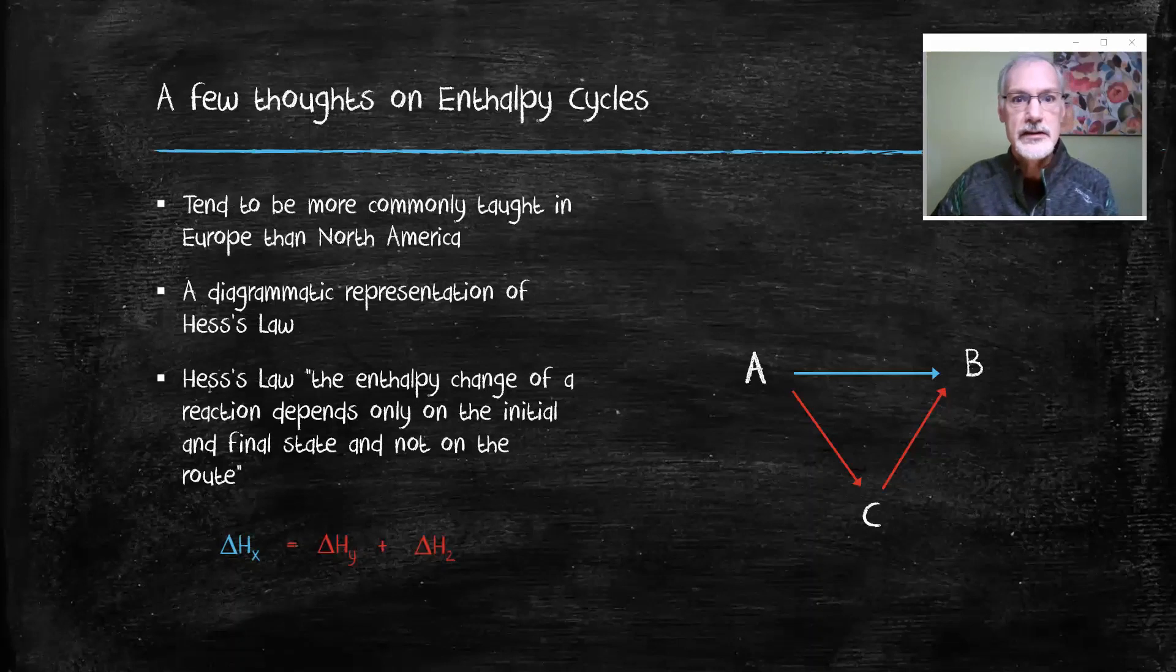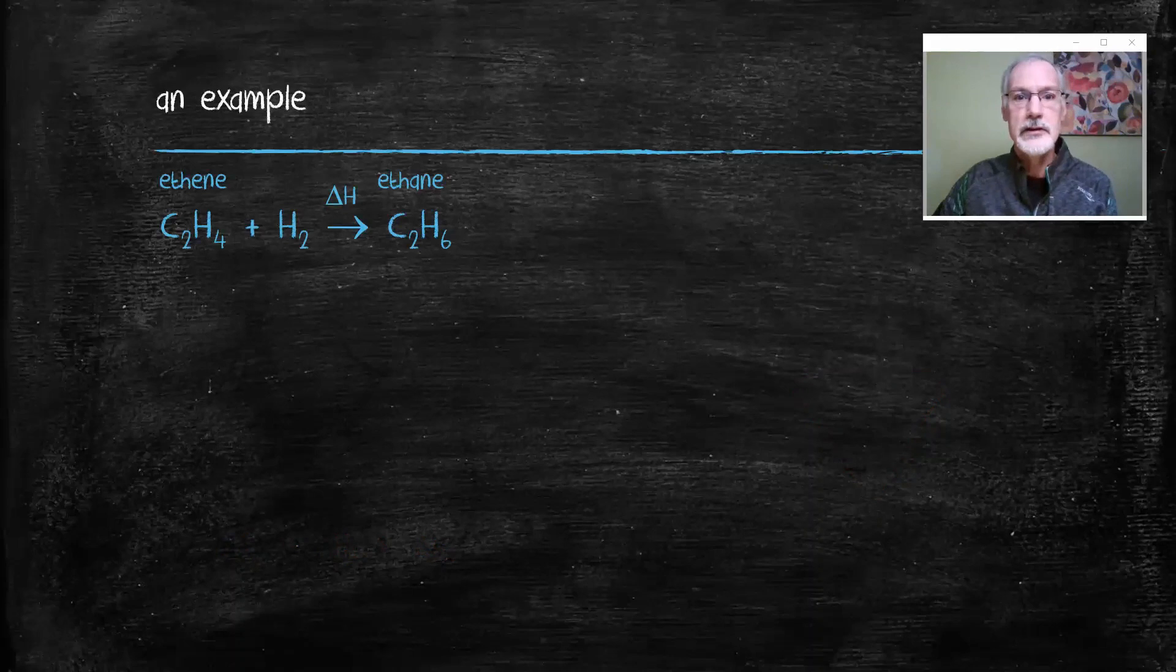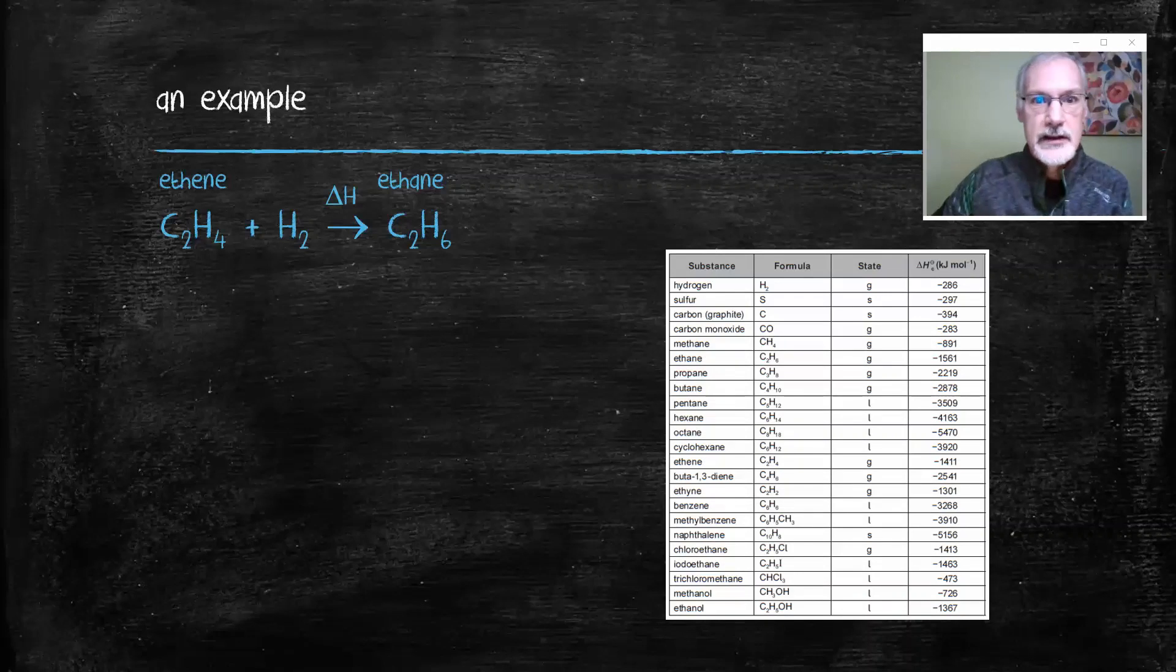Now let's take a look at this in a chemical example. Suppose I want to figure out the heat for this reaction to turn ethene into ethane. I'm going to look here in your IB data booklet for some data and I have some data on heats of combustion. So let's take a look at burning these chemicals.